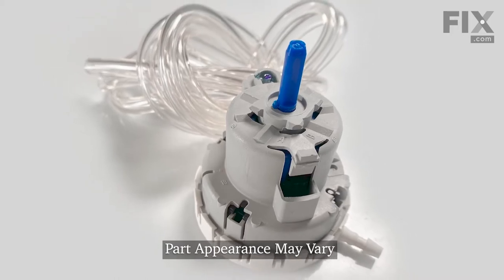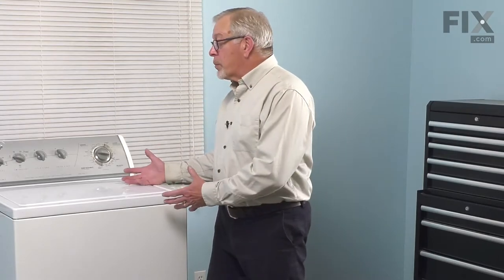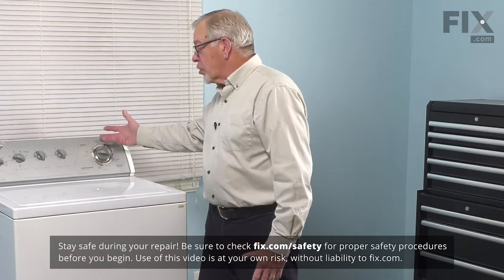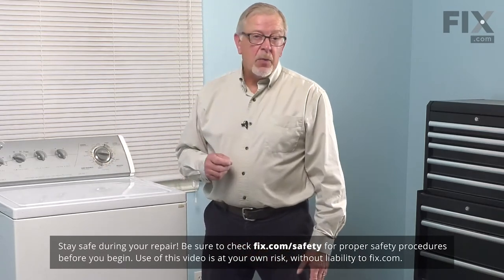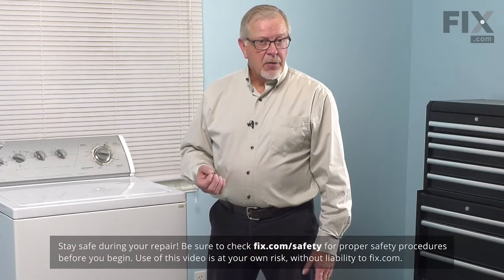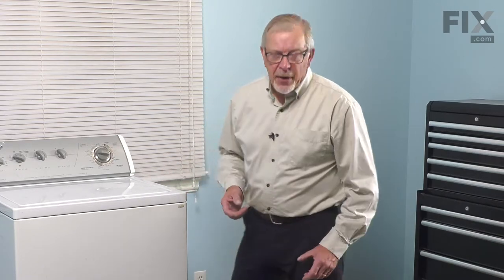Now, before we begin this repair, we'll need to make sure that we pull the washer far enough forward that we can tilt the control panel back. First of all, you'll want to disconnect the power. Either unplug the washer or locate the electrical panel, turn off the appropriate breaker, or remove the appropriate fuse. Once we've done that, we'll pull the washer forward and start the repair.